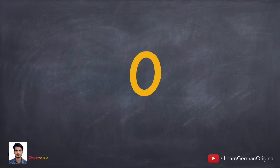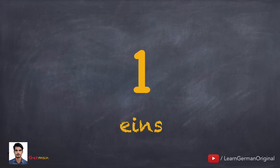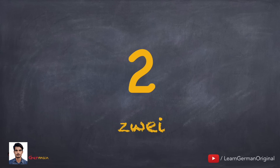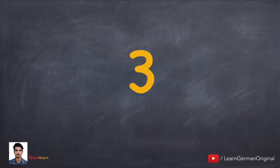Are you ready? Here we go. Null. Eins. We learned in previous lessons that S has the sound of Z, but whenever the letter S occurs at the end of a German word or after the last vowel within that word, it is pronounced as in English S. Zwei. The German consonant Z is pronounced like the English TS sound, found at the end of words such as mats, pots, bits.